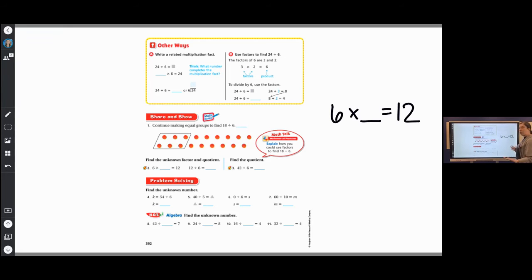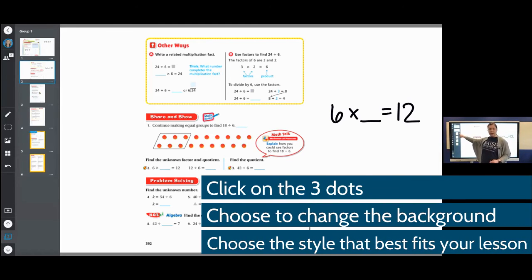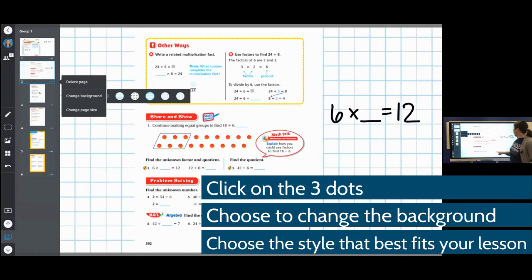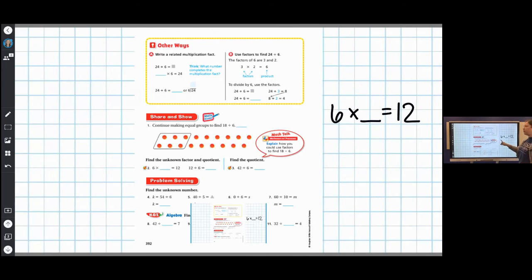Notice I have the white background. I can do the same thing when I touch the numbers and I select the three dots of the slide I'm on. I can also choose to change background. Here I can choose a format that could help me and my students complete our work. Notice I'm just touching anywhere on the board to touch out of that side space.